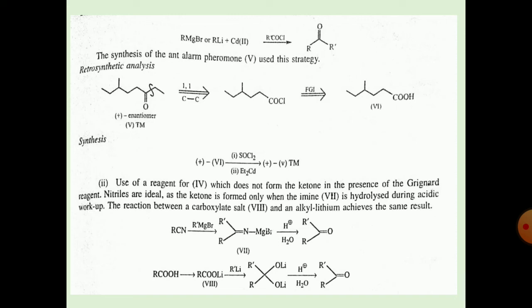The retrosynthetic analysis for the alarm pheromone: the plus enantiomer is the target molecule. A 1,1 carbon disconnection gives an acid chloride. Next, functional group interconversion converts the acid chloride into the acid. In the synthesis, the acid group reacts with SOCl2 to form the acid chloride, and then Et2 conditions give the target molecule — the ketone plus enantiomer.